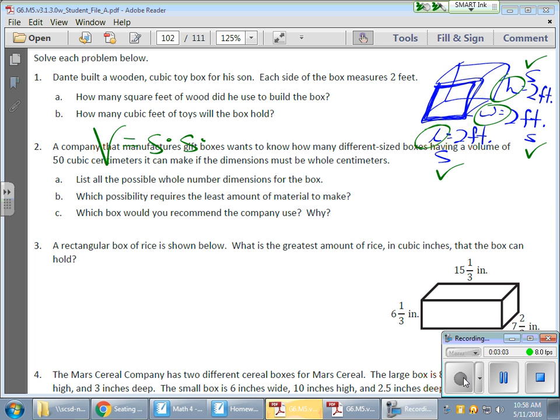So, it could look like this, times your height, or it could actually look like s to the third power, which is really side, times side, times side. And so, I fill in my values, I have two times two, times two, or two to the third power. So, I can do that, two to the third power, just like that. Two times two gives me four, four times two gives me eight.